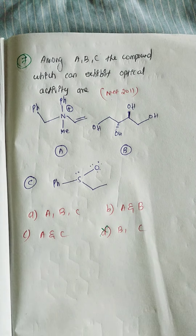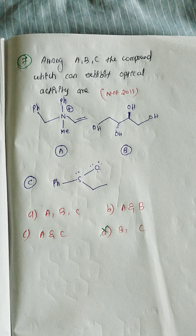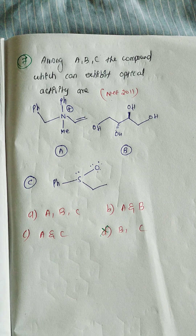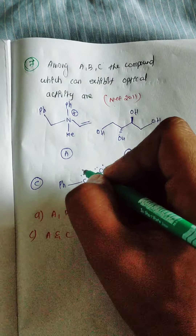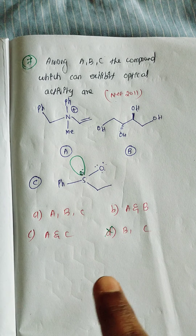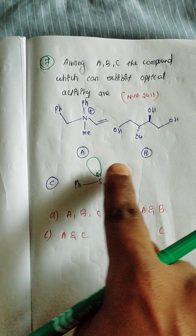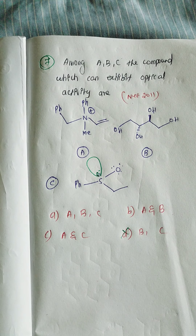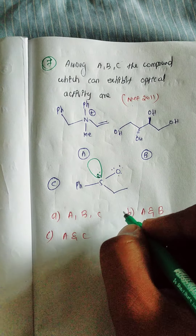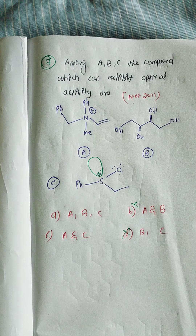Coming to option C: chirality must include the lone pair of electrons on nitrogen. Counting the four groups including the lone pair — 1, 2, 3, 4 — option C is also chiral. So both A and C are chiral, meaning option B (as the answer choice listing A and C) is the correct answer.